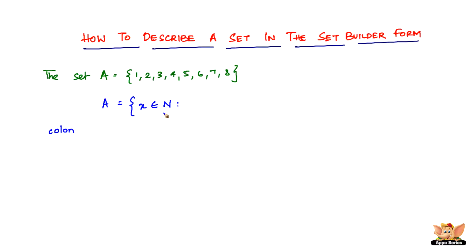The specific condition here is that the elements don't extend beyond 8. So we write: such that X is less than or equal to 8. Close the bracket. This represents exactly the set: X belongs to natural numbers such that X ≤ 8. For example, 1 is less than 8, 2 is less than 8, 3 is less than 8 — all elements satisfy the condition. This is how you write a given set in set builder form. Let's look at another illustration.